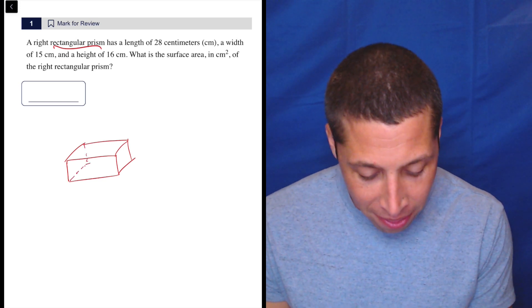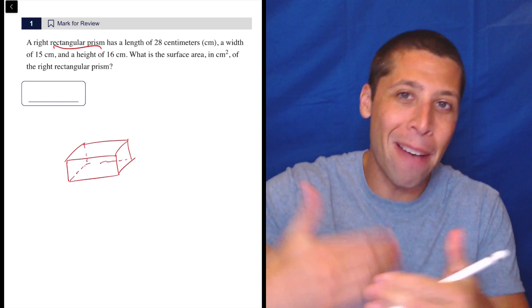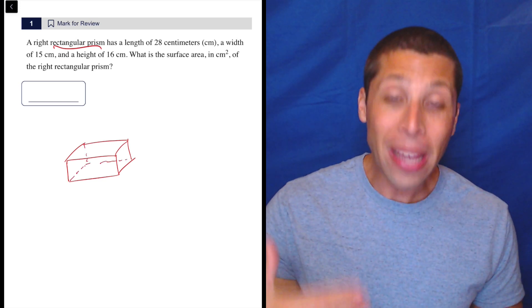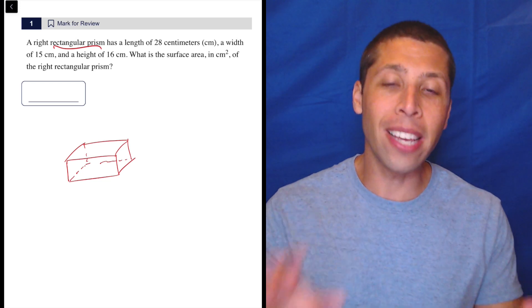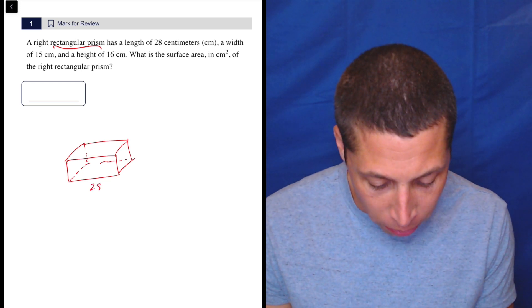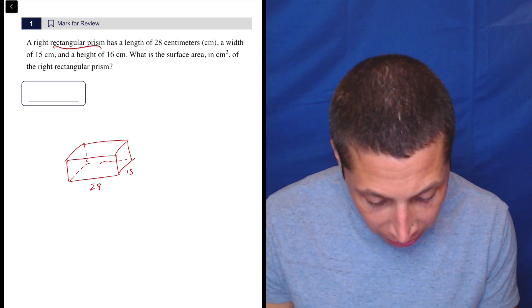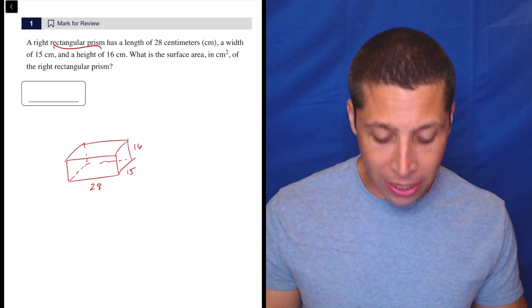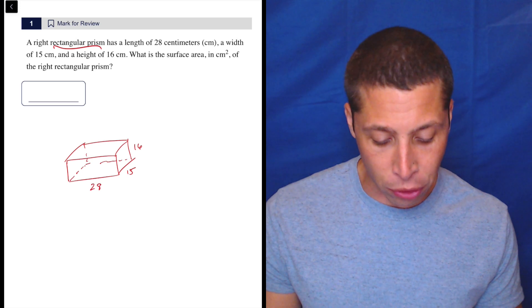So there's other sides that kind of are on the back in a way. So basically, the way that this is going to work is each side is duplicated. So let's focus on the length of 28, width of 15, and height of 16. So what do we need to do? We need to find the area of each face.